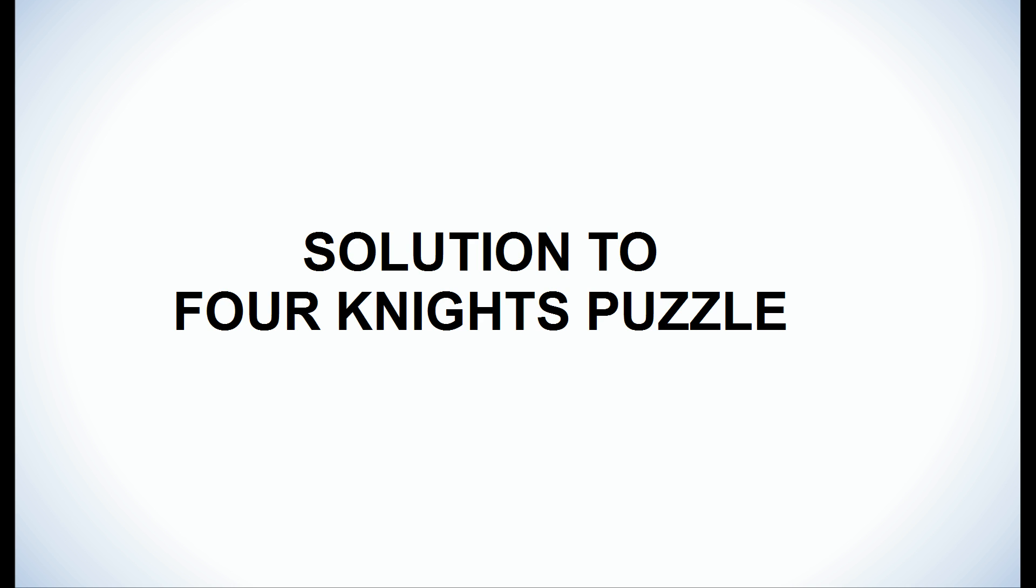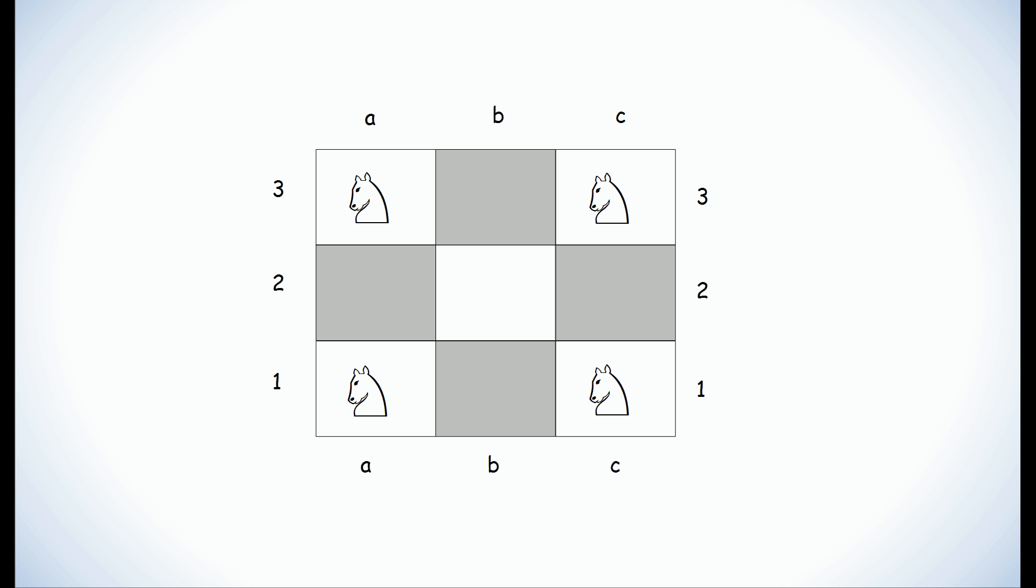The reason this puzzle is interesting is you can get a very interesting solution using graph theory. And we're going to start off with a very simple technique. What we're going to do is we're going to draw a line between two squares if a knight can move between those two squares.